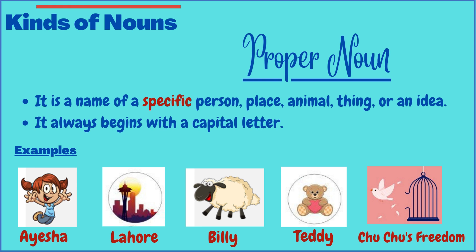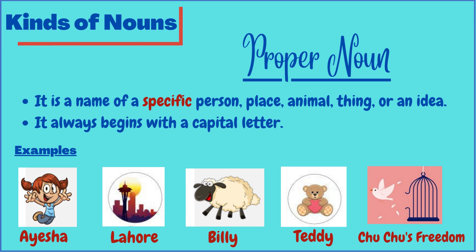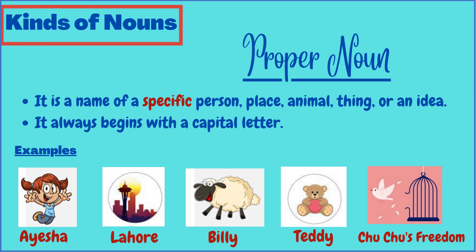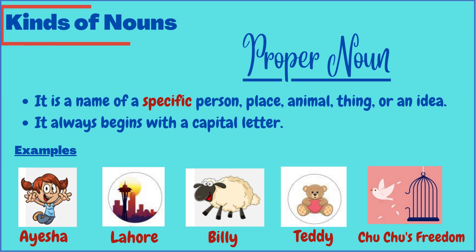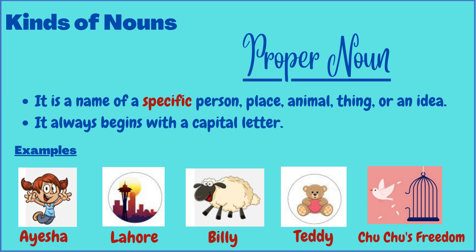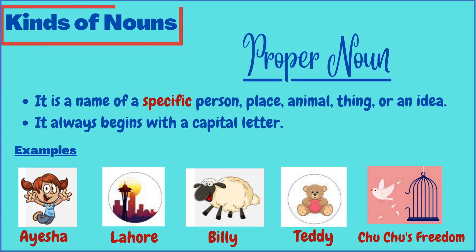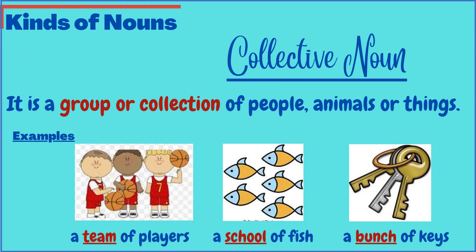Now we are going to talk about the proper noun. It refers to the name of a specific person, place, animal, thing, or an idea. One thing to keep in mind is that we always capitalize the first letter of a proper noun. Examples: 'Aisha' refers to the name of a particular girl; 'Lahore' is the name of a specific city; a sheep named 'Billy' specifies a particular sheep; 'Teddy' names a specific toy; and 'Choo Choo's freedom' refers to a particular freedom.